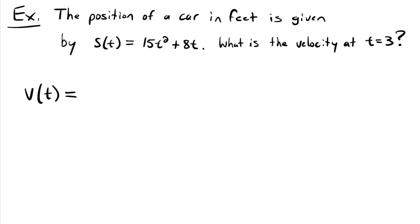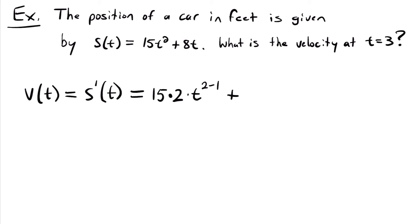The velocity function equals the derivative of the position function. Using the power rule: multiply 2 by 15 and subtract 1 from the exponent, giving 15 times 2 times t to the first power. For 8t, we get 8 times 1 times t to the zero power, which is just 8. So the velocity function simplifies to 30t plus 8.